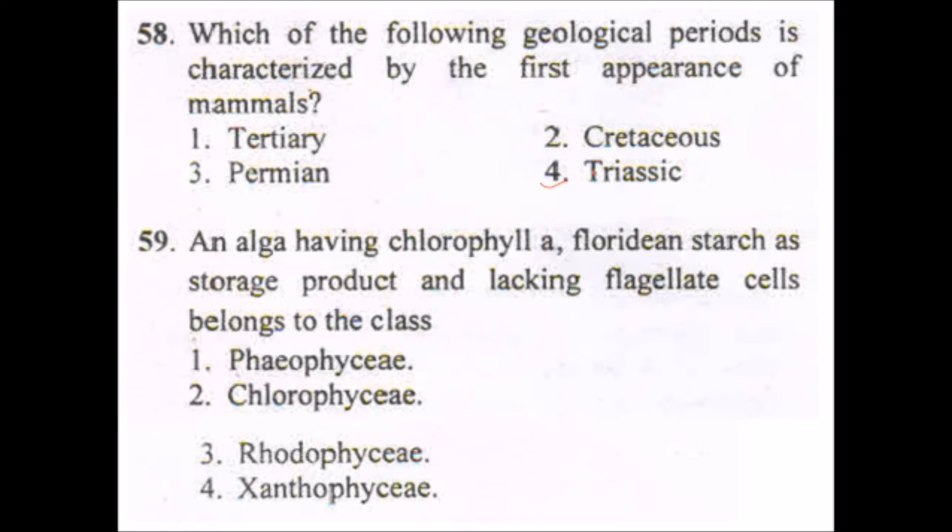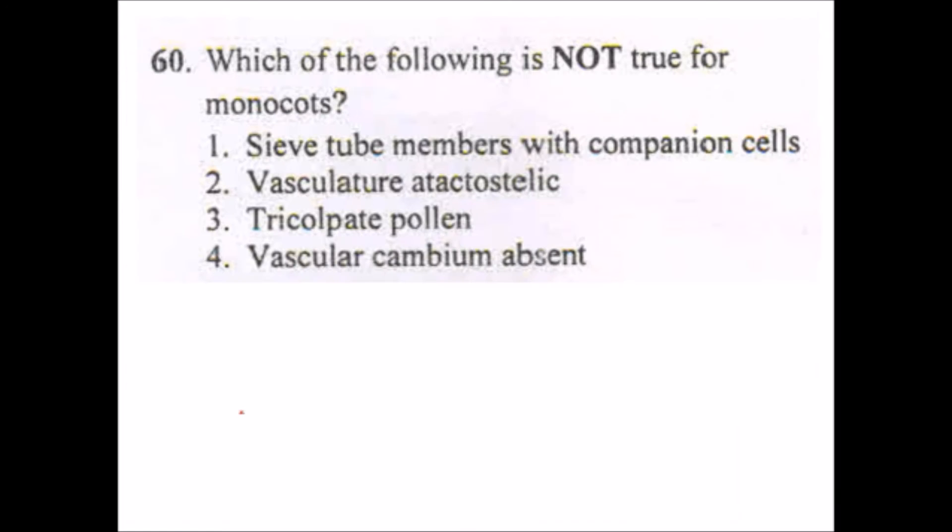Next two questions are very theoretical, no need of explanation. Which of the following geological period is characterized by the first appearance of mammals? We all know that comes in the Triassic era where it developed from the reptiles. Then, algae having chlorophyll A form, uridine starch as storage product, and lacking flagellated cells belong to class Rhodophyceae.